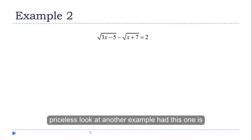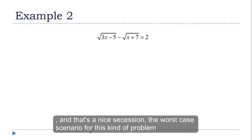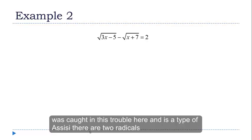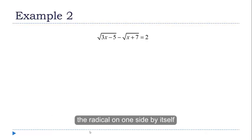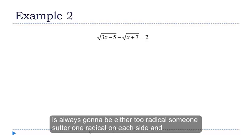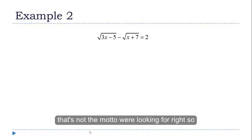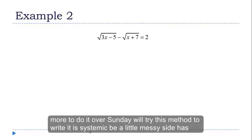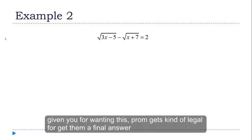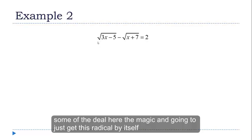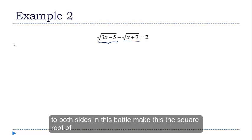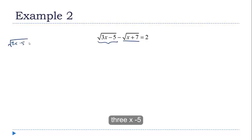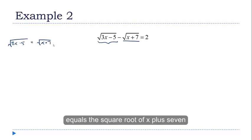Let's look at another example — this one is the worst-case scenario for this kind of problem. There are two radicals, and that's a problem because there's no way to get the radical on one side by itself; there's always going to be either two radicals on one side or one radical on each side. We're still going to apply this method — it's just going to be a little messy. What I'm going to do is get one radical by itself, so I'll add the square root of x plus 7 to both sides. That makes the equation: the square root of 3x minus 5 equals the square root of x plus 7 plus 2.